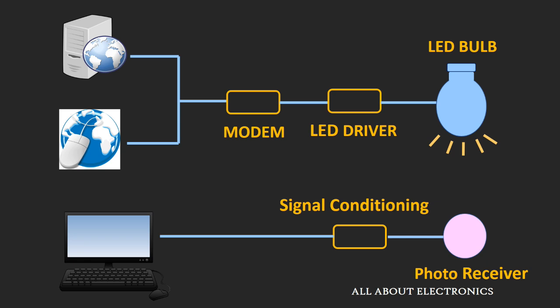Now let's see the schematic of a Li-Fi transmitter and receiver system. As you can see, the data coming from the web server or internet first goes to the modem, which provides the necessary modulation to the incoming data stream. This modulated data is then fed to the LED driver, which changes the driving current for the LED bulb according to the incoming streaming data. At the receiver end, the optically received data is first converted into an electrical signal using the photo receiver or a photodiode. After signal conditioning, this data is fed to a computer or laptop.